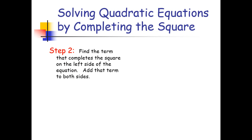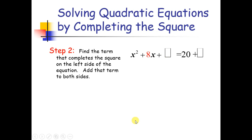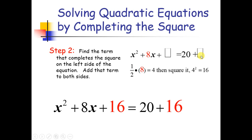After that, step 2: find the term that completes the square on the left side, then add that term to both sides. We make a space on both sides. To complete the square on x squared plus 8x, we get half of 8, which is 4, and 4 squared is 16. Therefore we put 16 in both blanks, giving us x squared plus 8x plus 16 equals 20 plus 16.